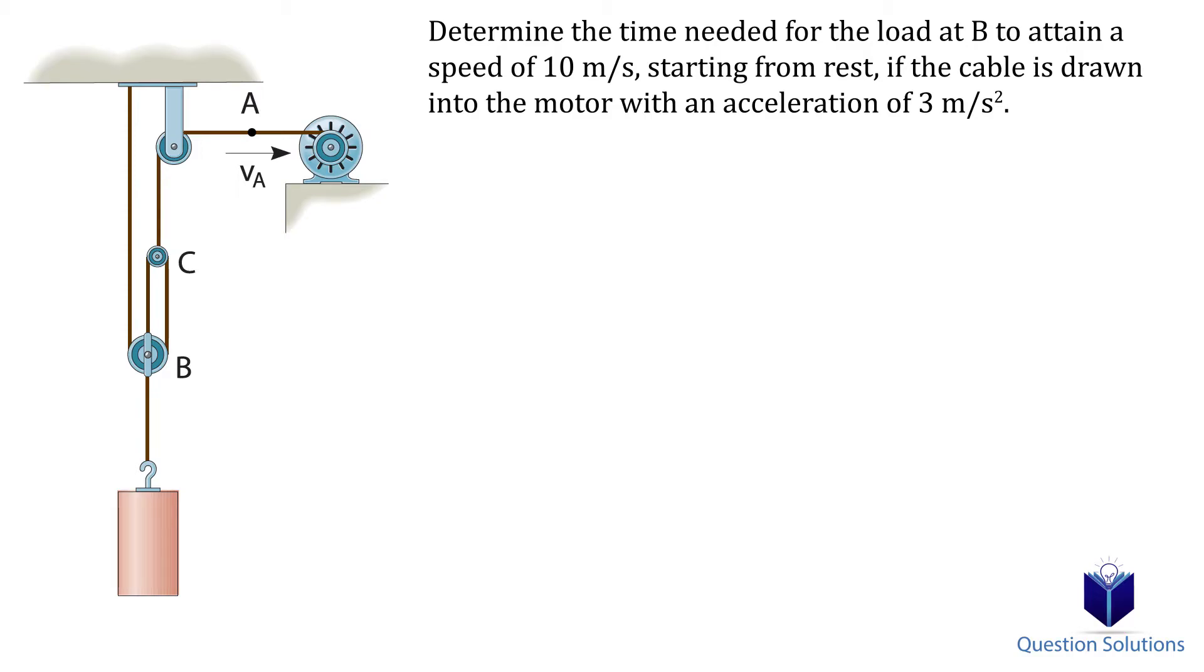In this question, we need to determine the time needed for the load at B to attain a speed of 10 meters per second, starting from rest. We will establish one datum in the horizontal direction at the top pulley and another one in the vertical direction at the same pulley.